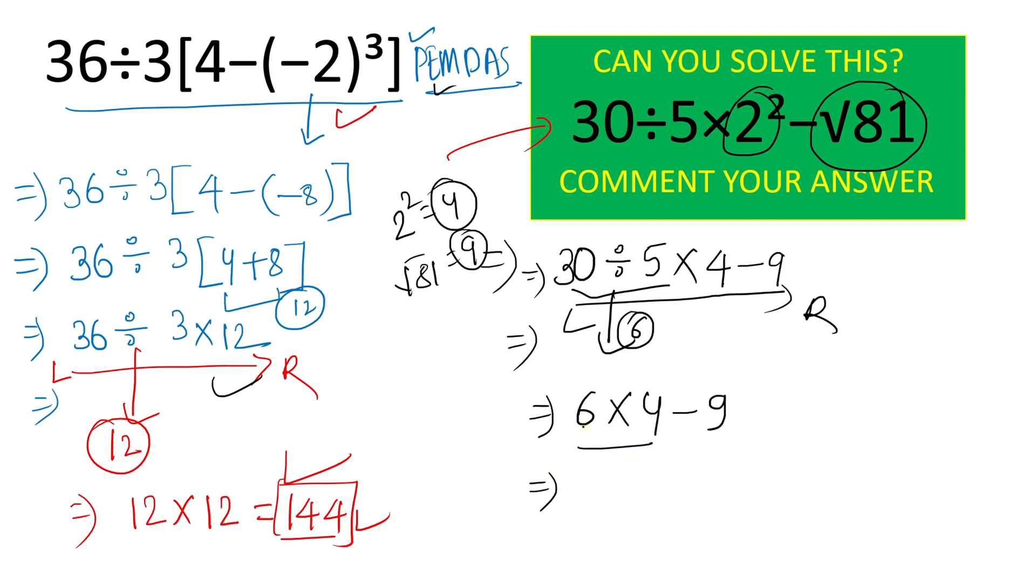And 6 times 4, we will give result 24 minus 9, and this will give result 15 here.